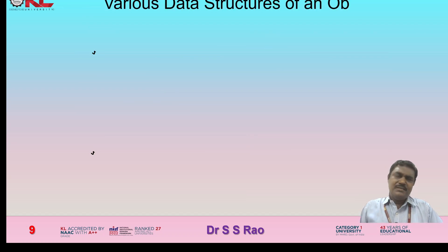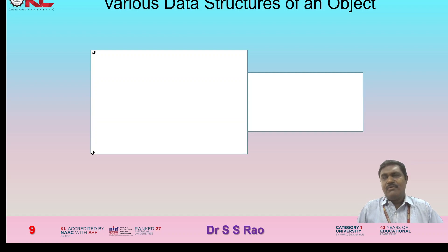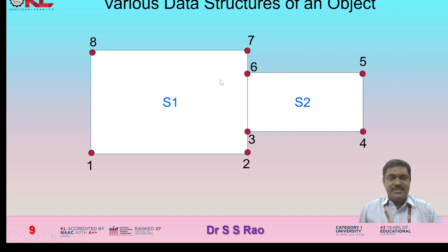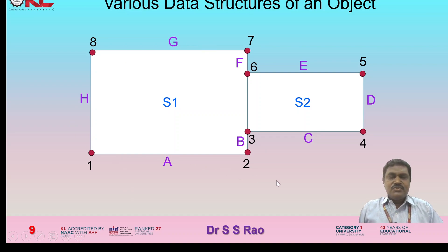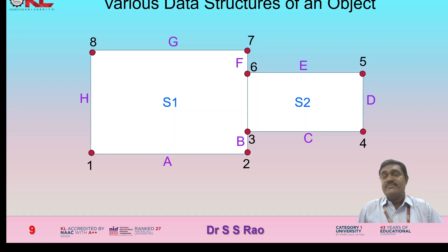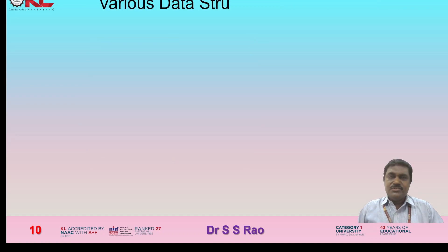Let us take a simple example of data structures for an object. We identify the salient points and assign numbers to them. We can assign the surfaces — surface S1 and surface S2 — and also assign the edges, where A, B, C, D, E, F, G, H represent the edges. For creating this object, the geometrical information is stored in the database.